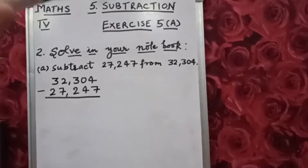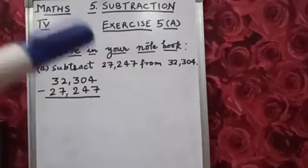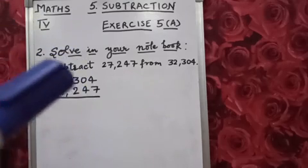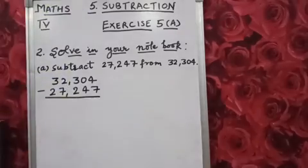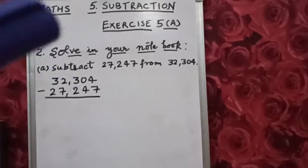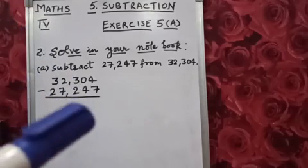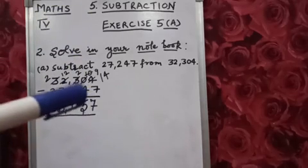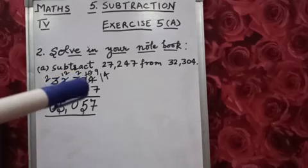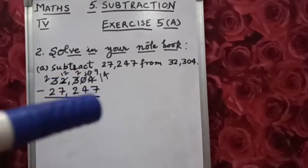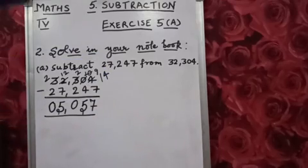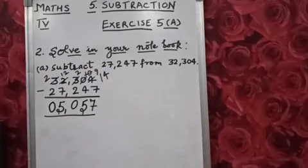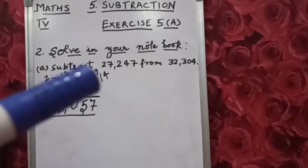4 minus 7 is not possible, so we will take borrow. But the next number is 0, so we can't take borrow from 0. The same thing we did in previous questions — 0 will take borrow from 3. After taking borrow from 3, 0 becomes 10. Now 4 takes borrow from 10, 4 becomes 14, 10 becomes 9, and 3 becomes 2.